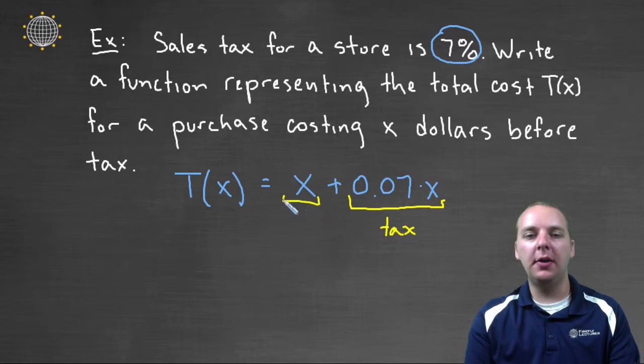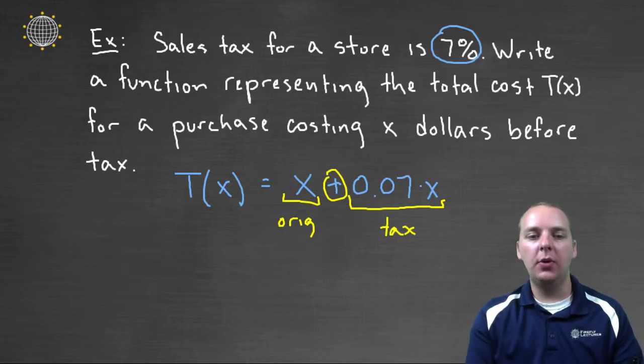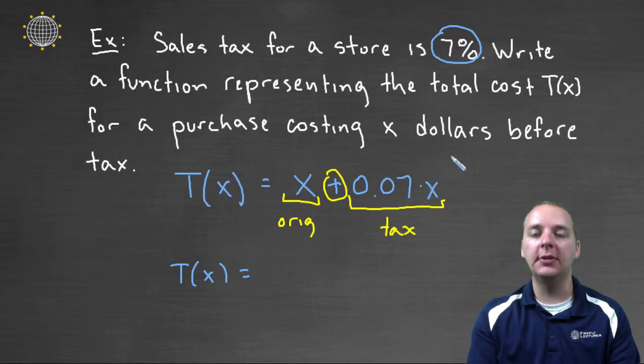This part here will be the original cost. And then when you add them together, you're adding the tax on, basically. Now one nice thing that I noticed is that the X and the 0.07X, those are like terms. They both have an X raised to the first power. So you can combine the like terms to get 1.07X.